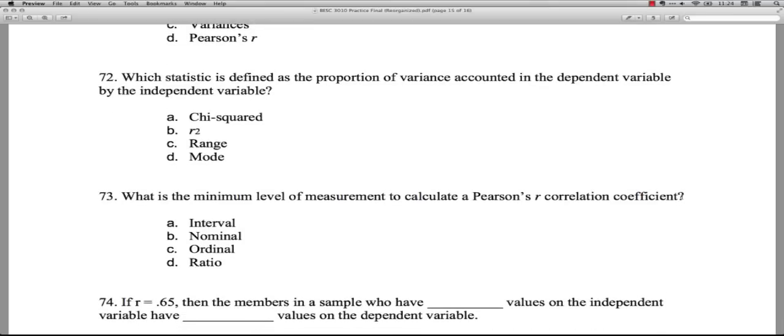Question 72: Which statistic is defined as the proportion of variance accounted in the dependent variable by the independent variable? Sometimes called proportion of variance explained. A, Chi squared. Now, chi squared is an inferential statistic for looking at the distributions of two categorical variables. That's not it. B, R squared. Yes, that actually is the correct one. R squared is the same thing as the proportion of variance accounted for or explained, at least in a correlation or regression setting.